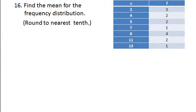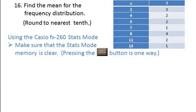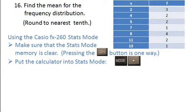We're given a frequency table and asked to find the mean, so we have to work with the data in a frequency table. It's really pretty simple though. You're going to enter the stats mode in the calculator. Remember you probably want to press on and make sure everything is clear, then enter the stats mode which is the mode decimal point key.